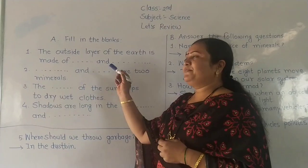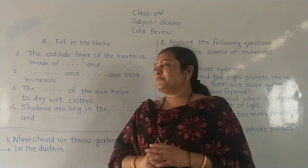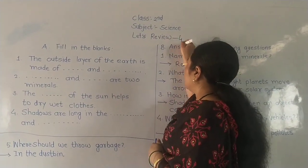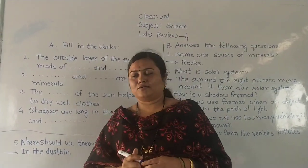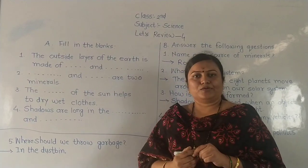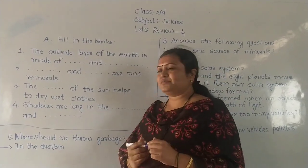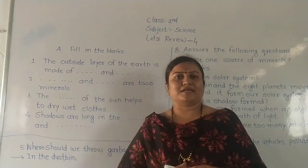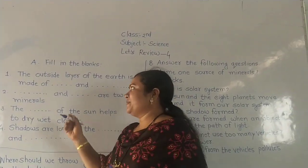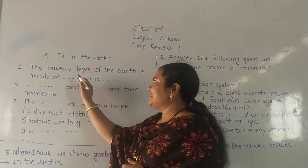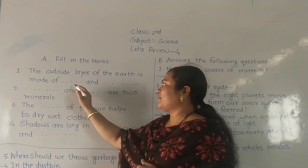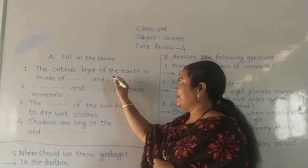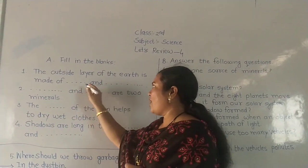Here is question A — fill in the blanks. The outside layer of the earth is made of blank and blank. Our answer is: the outside layer of the earth is made of rocks and minerals.